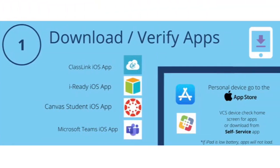Step 1: Download or verify apps needed for Phase 2. You will primarily be working in the Canvas iOS Student app and in the ClassLink iOS app for access to iReady. On a personal device, please go to the App Store to download the needed apps. If you're using a VCS-issued device, please go to the Self-Service Kiosk app to download an app if necessary.